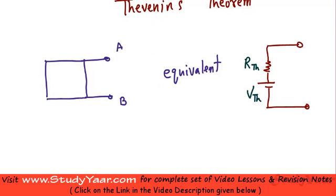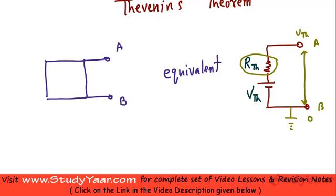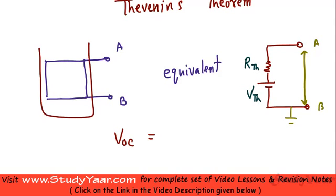Let's just say you connect a voltmeter over here. When you connect a voltmeter, you are going to get a reading which represents the open circuit voltage across AB. If you look at this equivalent circuit, the open circuit voltage across AB is simply Vth. This is an open circuit, so no current flows and there is no drop across the resistor. Therefore, Vth is the open circuit voltage across this network.